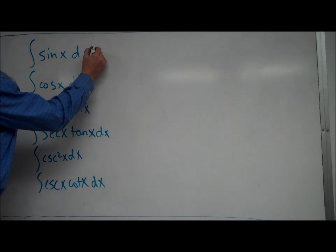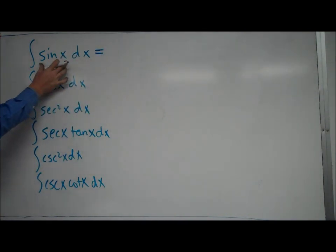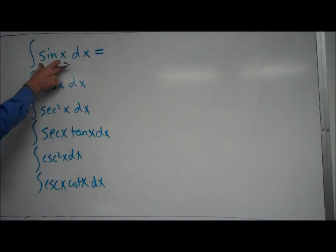Like I said before, an antiderivative is essentially a function that when you come up with it, if you take the derivative of it, becomes this guy right here. So we have to think, what function, when we take the derivative of it, becomes sine of x?